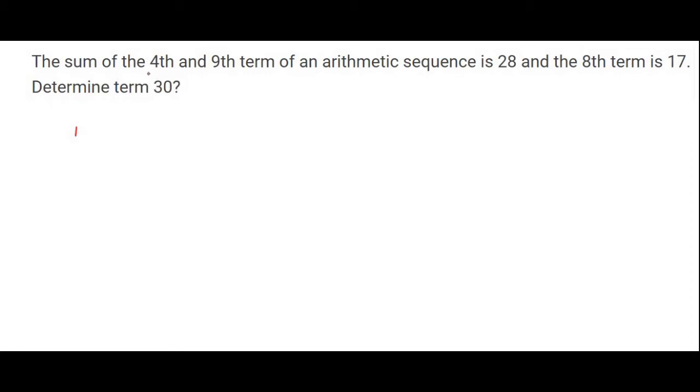They're saying that the sum of only term 4 and term 9 is 28. So what this actually means is T4 plus T9 equals 28. Then they also tell us that the eighth term is 17, so we can say T8 is 17.